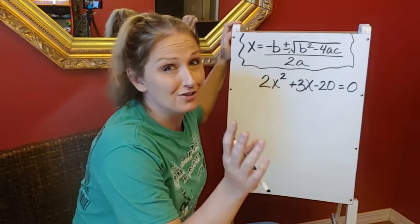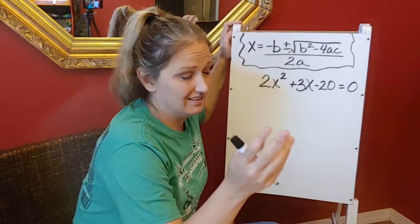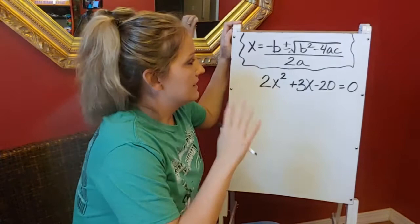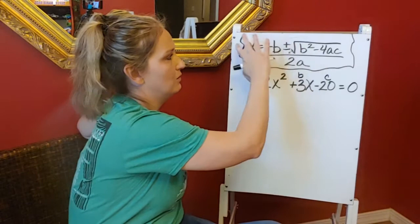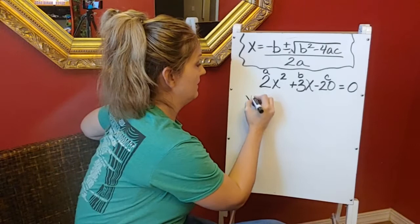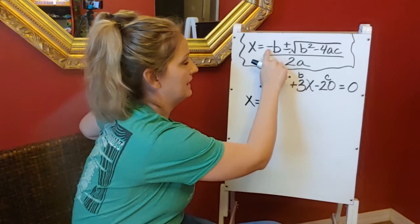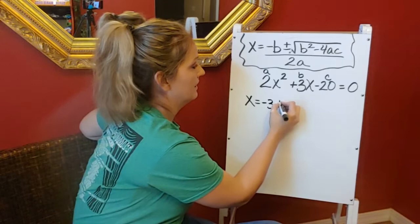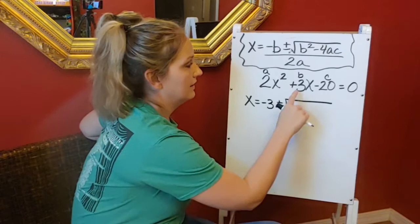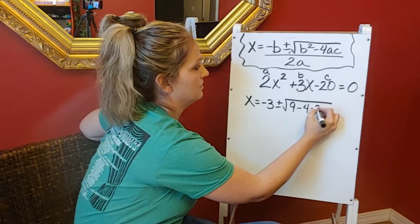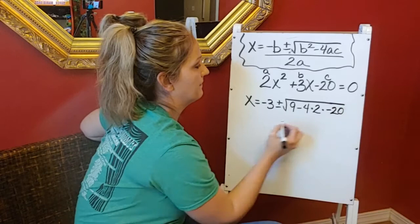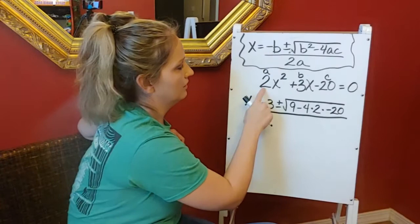Let's look at another example. I know that was a lot of information for problem 1 — these just take practice. I'm going to label the coefficients as a, b, and c and plug them into the quadratic formula. So x equals negative b — b is 3, so it's negative 3 — plus or minus the square root. b squared: 3 times 3 is 9, minus 4 times a (which is 2) times c (which is negative 20), all over 2 times 2.